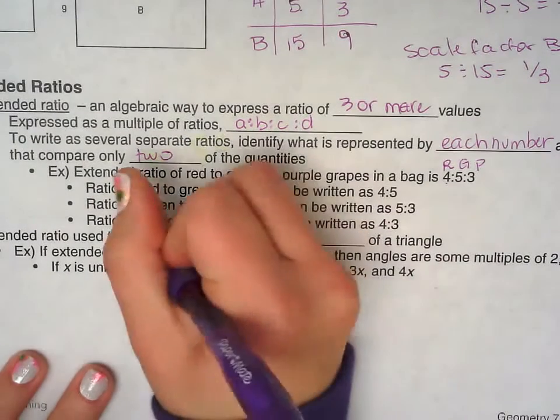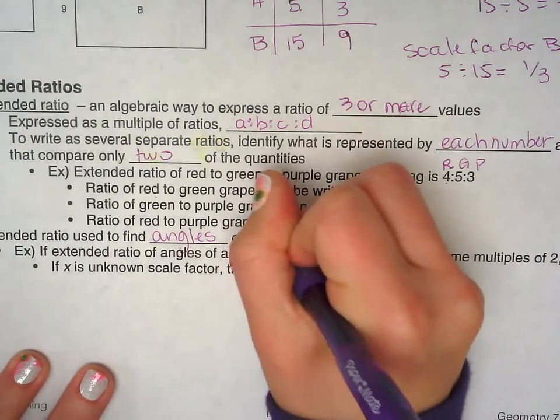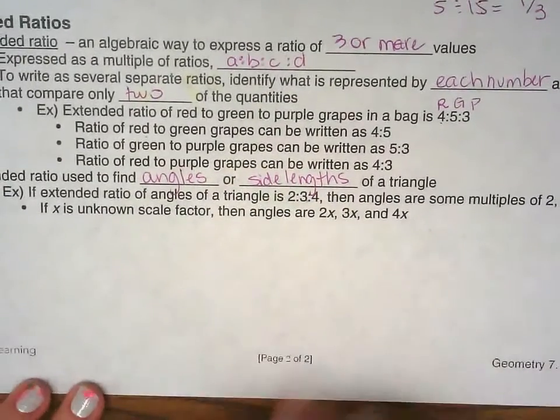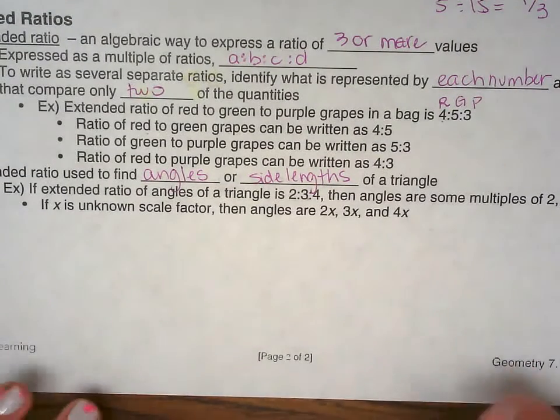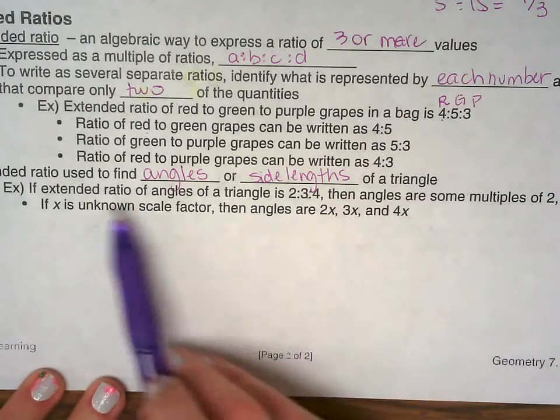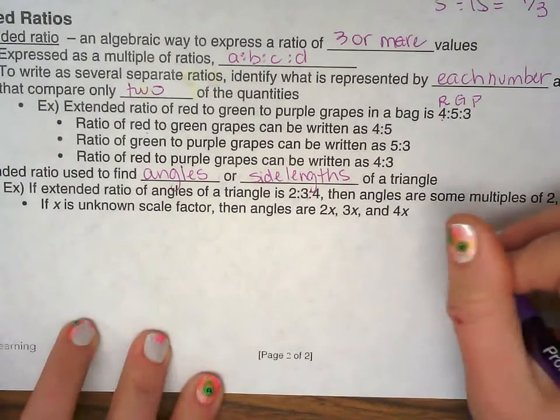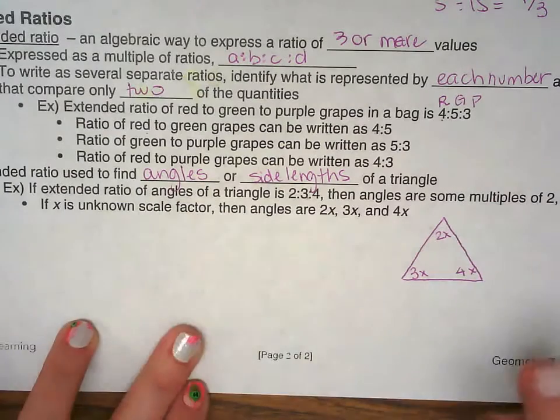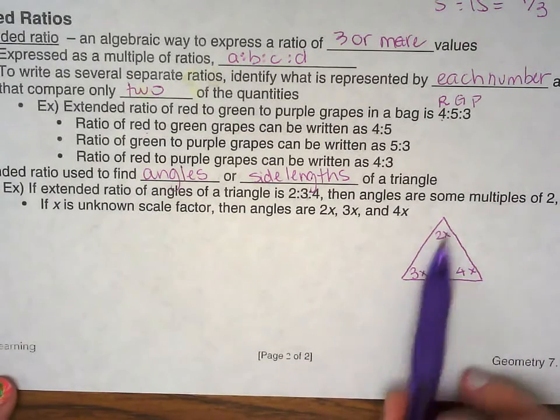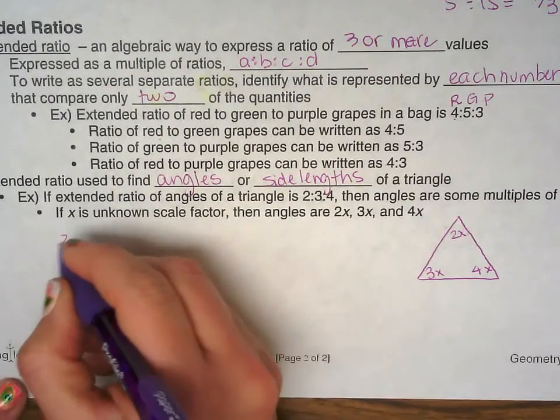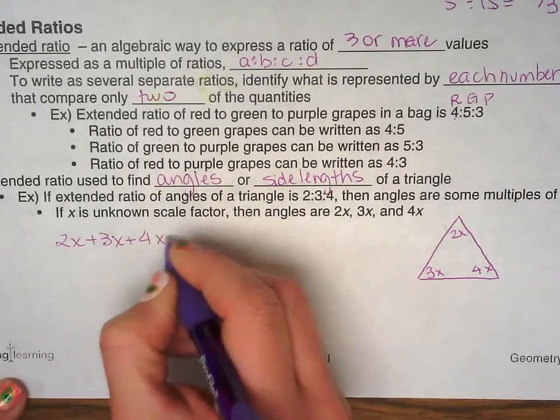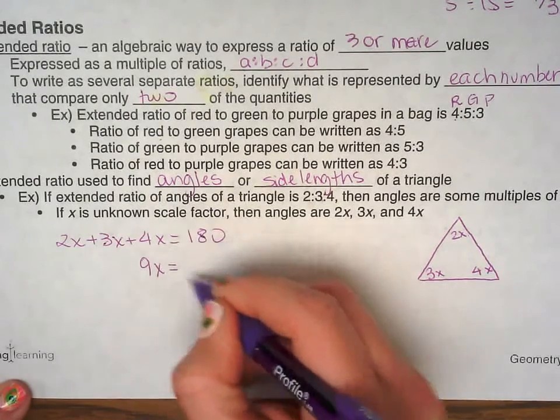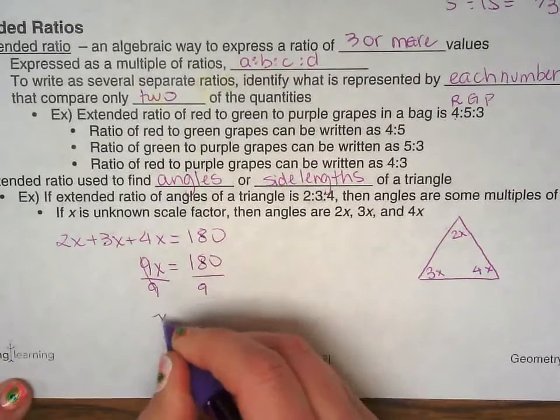So extended ratio used to find angles or side lengths of a triangle. We've done problems like these in the past and you guys aced it. So we're going to see this again. But now we didn't name it like that back in the day. We just flat out solved it. So if the angles of the triangle are 2 to 3 to 4, here's my pretty picture. So 2x, 3x, 4x. These are the ratios. And we all know if I add up all three angles from the triangle, they must add up to 180. So I know 2x plus 3x plus 4x, it must add up to 180. So combine like terms. So 4 and 3 and 2 is 9x. 180 divided by 9, you get x is 20.